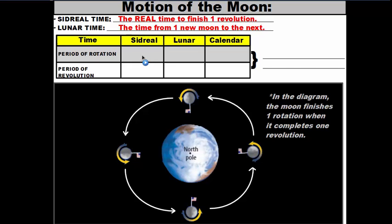For the period of rotation: in sidereal time it takes the moon 27.3 days — that's the actual time for the moon to complete one spin. In lunar time, from new moon to new moon, it's 29.5 days. And then our calendar time — just as we said 24 hours equals one day and 365 and a quarter days equals one year for earth — the calendar time for the moon is roughly 30 days, which we estimate as one month. So the period of rotation of the moon is about one month.